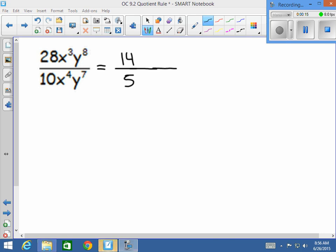Now we use the quotient rule. So we get x to the 3rd power minus the 4th power and y to the 8th power minus the 7th power. Remember, you always do the top exponent minus the bottom exponent.